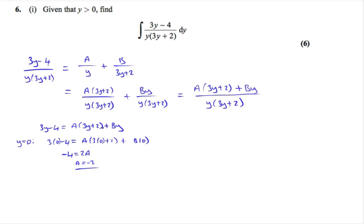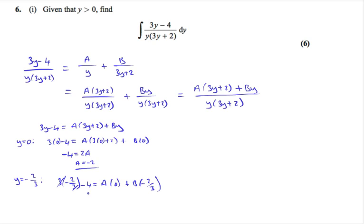To find the value of B, we make the bracket (3y+2) equal to 0, so y equals -2/3. Substituting: 3(-2/3) - 4 equals A(0) plus B(-2/3). The left side simplifies to -2 - 4 = -6, giving -6 equals -2/3 B. The minuses cancel, and multiplying by 3/2 gives B equals 9.